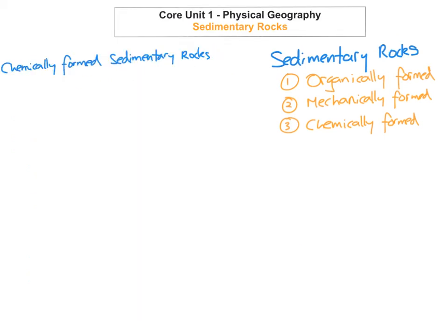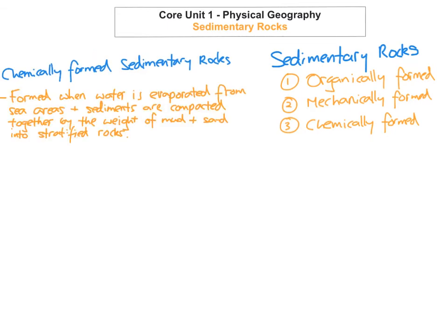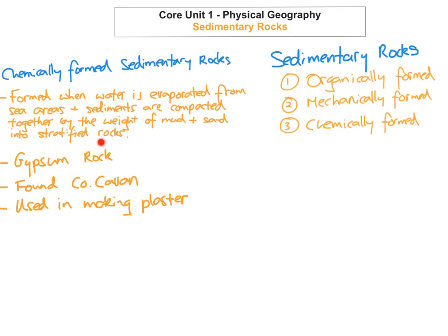The last type of sedimentary rock is chemically formed sedimentary rocks. These form when water is evaporated from sea areas, and then the sediments are compacted together by the sheer weight of mud and sand into stratified rocks. An example is gypsum, which can be found in County Cavan, and is used in the making of plaster.